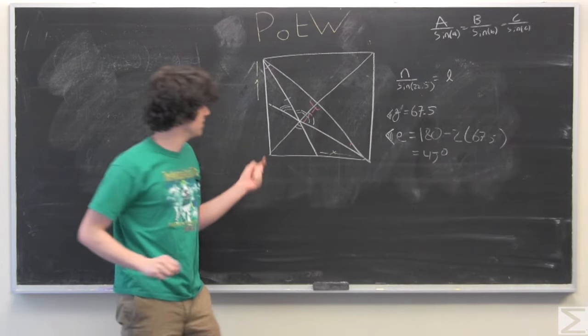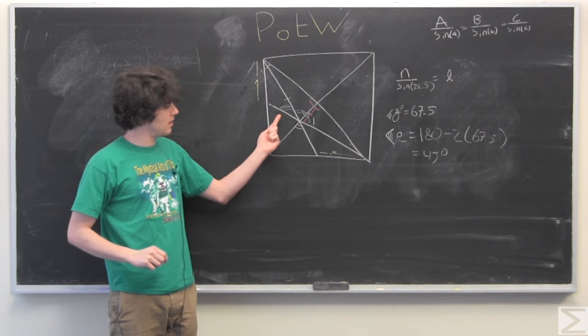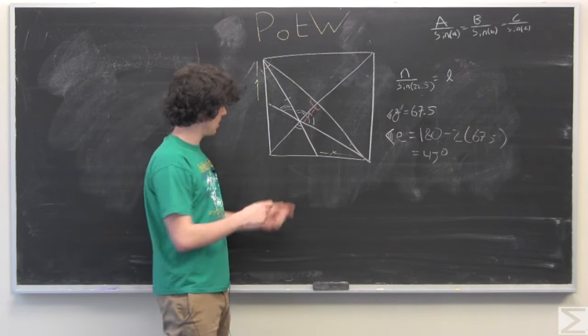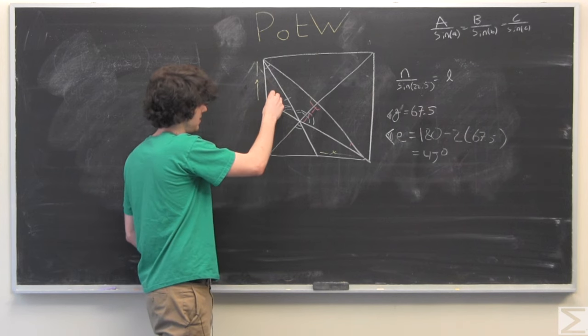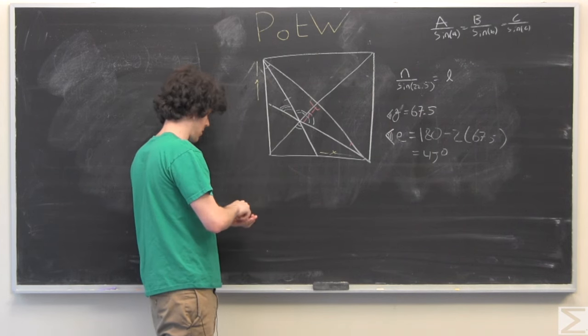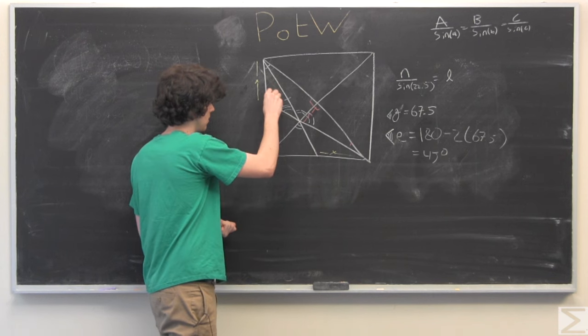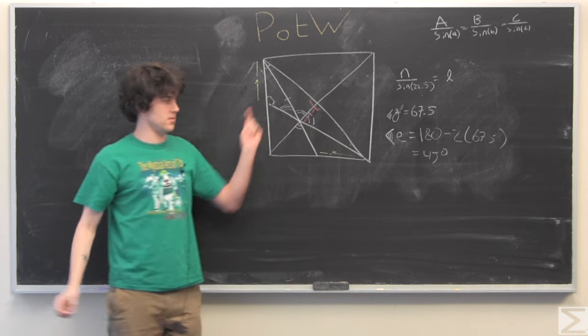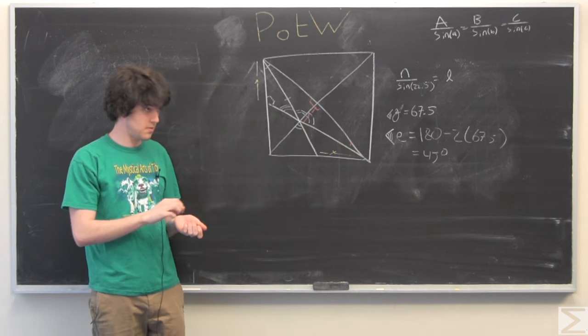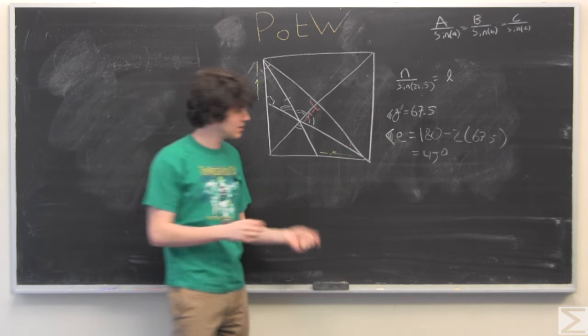So we could call this angle E, which is 45 degrees. Since we know these two angles, we'll find this angle, which we will call angle S.